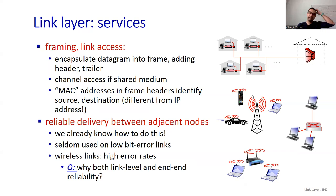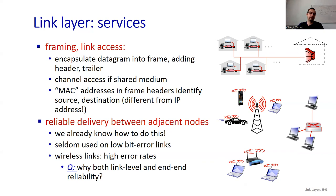Framing and link access: encapsulate the datagram into a frame, adding a header and trailer. Channel access if shared medium. MAC addresses in frame headers identify source and destination — different from IP addresses. This is important because we use IPs in the layer above — layer three, the network layer. Now we are at layer two; switches are not routers, they only work at layer two. So we need addresses to communicate at this layer, and we call them MAC addresses.